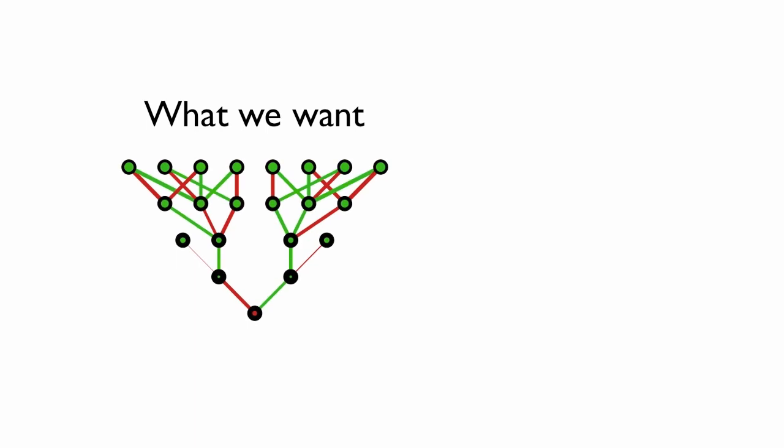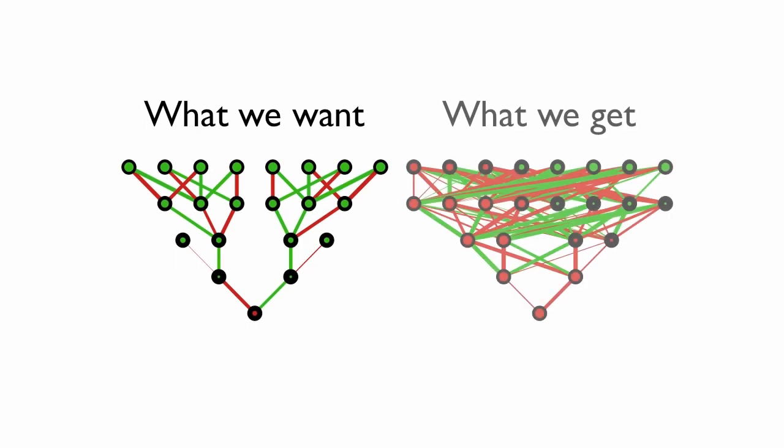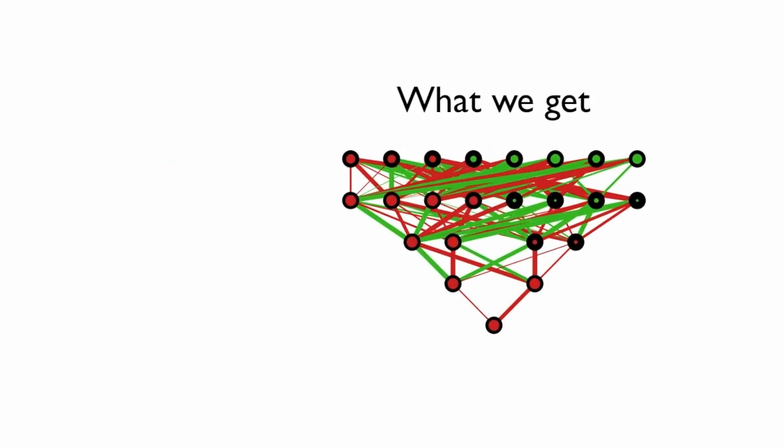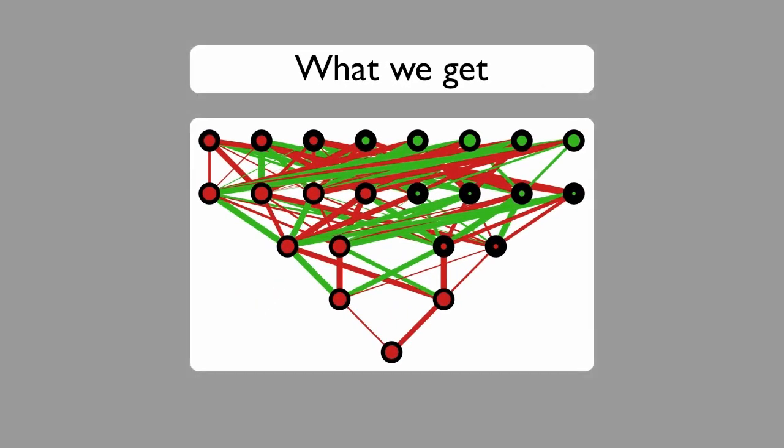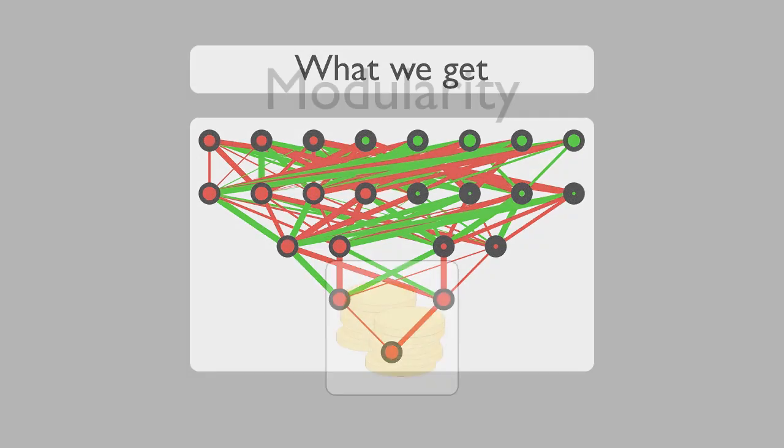However, despite the advantages of modularity and regularity, networks evolved with traditional evolutionary algorithms are often irregular and entangled, meaning that we have to use some special techniques to encourage modularity and regularity to evolve.